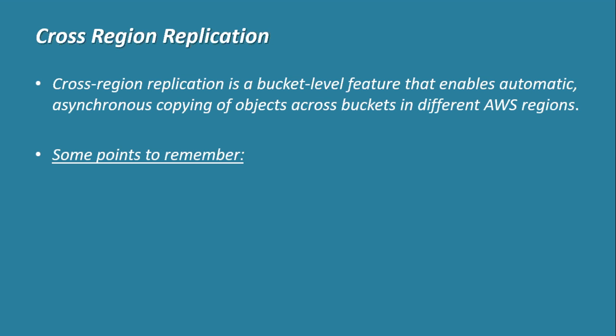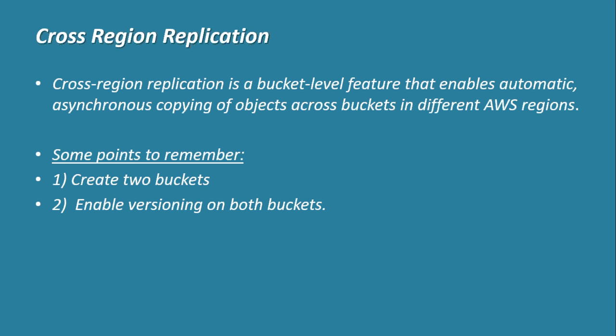When configuring cross-region replication, there are a couple of points to remember — and these are useful for the AWS Architect exam as well. First, you need to create two buckets in the AWS S3 console: one source bucket and one destination bucket in a different AWS region where you want your data replicated. Second, before enabling cross-region replication, you need to enable versioning on both buckets.